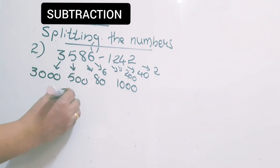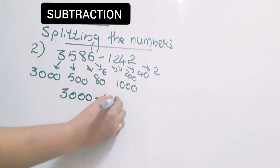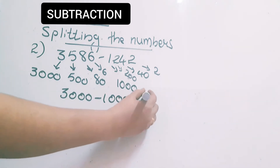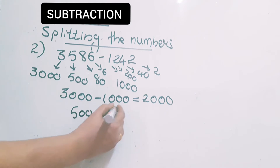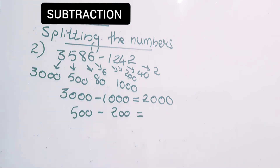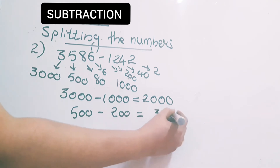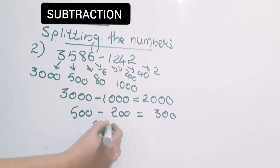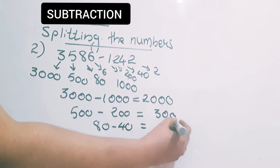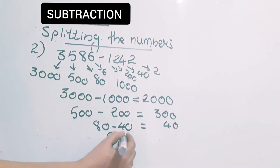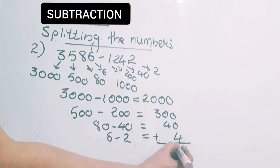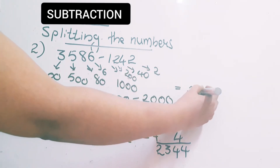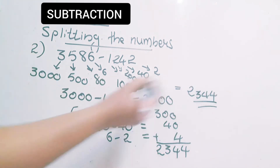Next we have to do thousands minus thousands: 3000 minus 1000. We know 3 minus 1 is 2, so here we get 2000. Next is hundreds minus hundreds: 500 minus 200. 5 minus 2 is 3, so write 300. Tens minus tens: 80 minus 40 is equal to 40 only. Then ones minus ones: 6 minus 2 is equal to 4. Finally add all these — you get 4, 4, 3, 2. So the answer is 2,344.